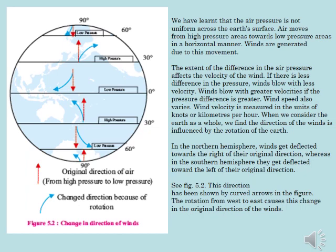Why does air move? The air pressure is not uniform across the earth's surface. Air moves from high pressure areas towards low pressure areas in a horizontal manner. Winds are generated due to this movement.